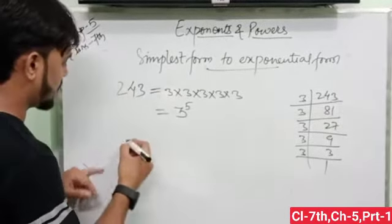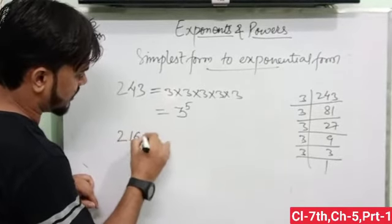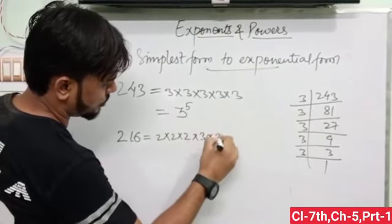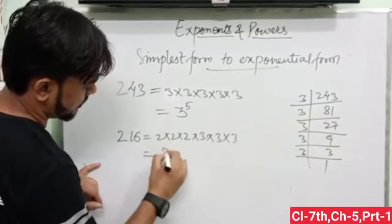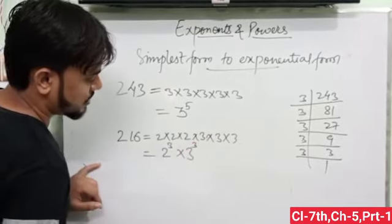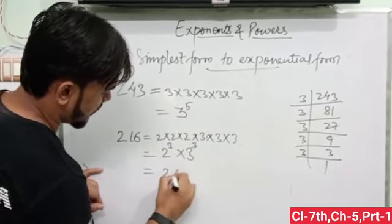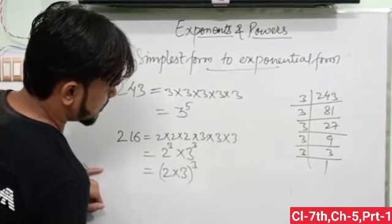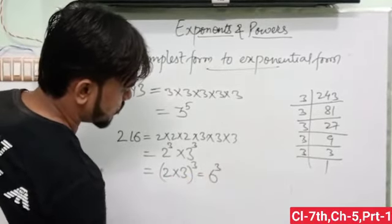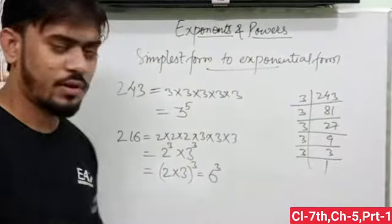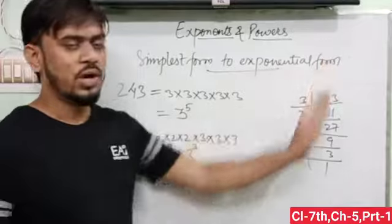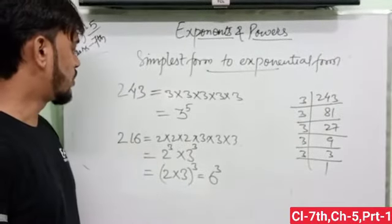Let's take another example. Because if we have 2 into 2 into 2 and 3 into 3 into 3, then 2 to the power 3 and 3 raised to the power 3. Now, we can write 2 into 3 raised to the power 3, because both have same exponents, which is 6 to the power 3. So in this way, we can change simplest form to exponential form, here, number.